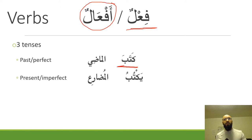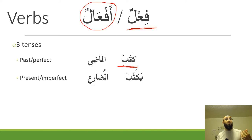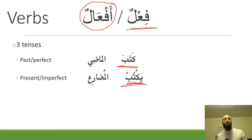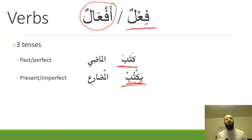Next is the present or imperfect tense — imperfect because the action hasn't been completed; we're still watching it unfold as we speak. An example in Arabic is yaktubu, which means 'he is writing.' The Arabic term for this tense is al-mudari.